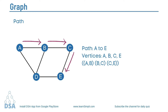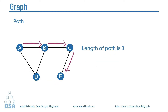We can have multiple paths from one node to another. For example, here we can have one more path from A to E: A-D is connected with an edge and D-E is connected. To find the length of a path, we count the number of edges in the path. For example, the length of this path is 3 because the number of edges included are 3. The length of a path should always be greater than or equal to 1.